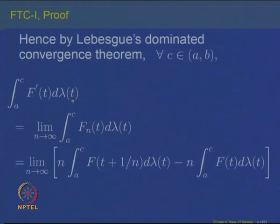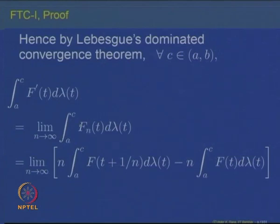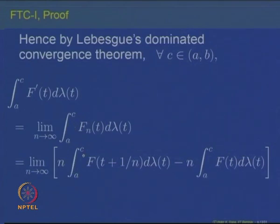Since Fₙ converges to F' and all functions are bounded by m over a finite interval [a,b], the Lebesgue bounded convergence theorem (or dominated convergence theorem) applies. For every c in [a,b], the integral from a to c of F'(t) dλ(t) equals the limit as n→∞ of the integral from a to c of Fₙ(t) dλ(t). Substituting the definition of Fₙ, this equals the limit of n times [integral from a to c of f(t+1/n) dλ minus integral from a to c of f(t) dλ].